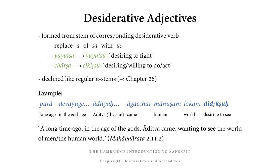Let's briefly look at an example of a desiderative adjective in this quote from the Mahābhārata: purā devayuge ādityaś cāgachat mānuṣaṃ lokaṃ didṛkṣuḥ. Purā means long ago; devayuge is in the age of the gods; ādityaś is āditya, i.e. the sun; āgacchat means came; and didṛkṣuḥ is the desiderative adjective of dṛś (to see), meaning desiring to see the mānuṣaṃ lokam, the human world. Altogether: a long time ago in the age of the gods, Āditya came wanting to see the world of men.